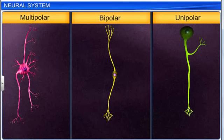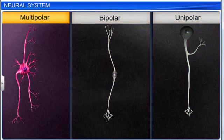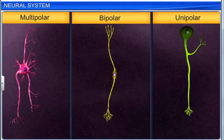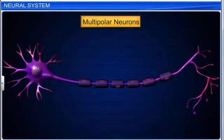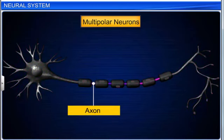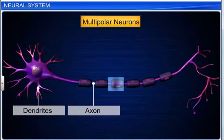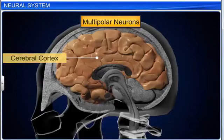Neurons, on the basis of the number of axons and dendrites, are divided into three types: multipolar, bipolar, and unipolar. Multipolar neurons have one axon and two or more dendrites, and are found in the cerebral cortex. Bipolar neurons, with one axon and one dendrite, are found in the retina of the eye.